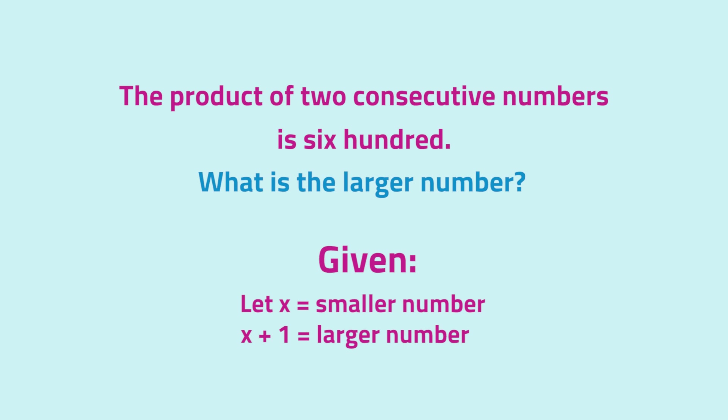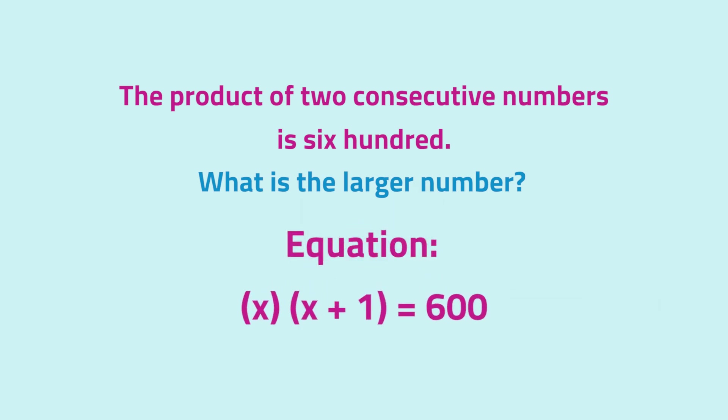The problem states that the product of these two numbers is 600. So we take x and multiply it by x plus 1, which will be equal to 600.